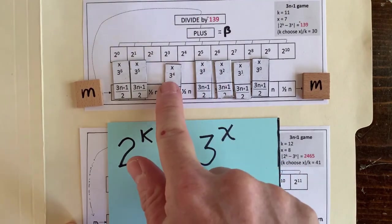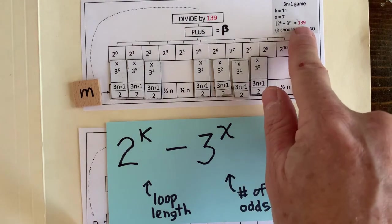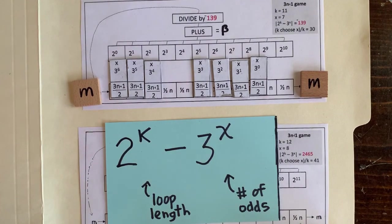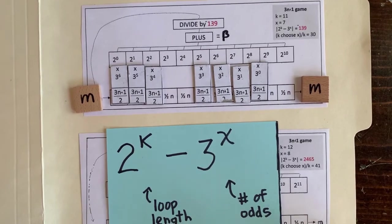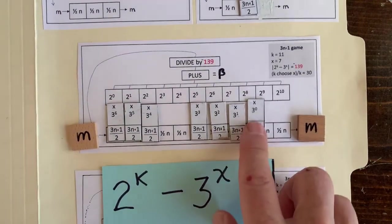So notice that no matter how we arrange the pieces, the denominator 2 to the k minus 3 to the x equals negative 139 is the same. So all we've got to do is find a beta that's a multiple of 139. And the chance of that is 1 over 139. But if we keep moving the pieces around, we might hit a good beta.